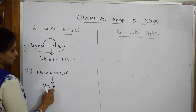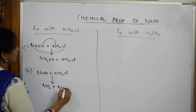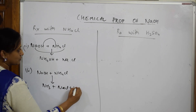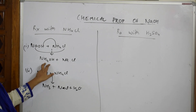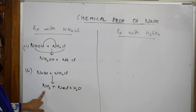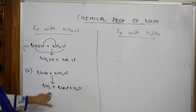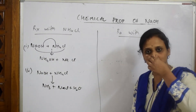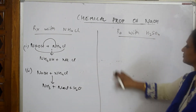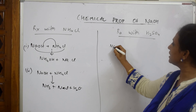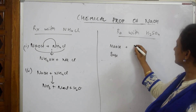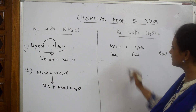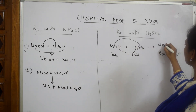So the products are ammonia gas — the pungent-smelling gas — plus NaCl and water. In the double displacement reaction, ammonium hydroxide and sodium chloride are formed; alternatively, ammonia gas, NaCl, and water are formed. In the exam, any option may be given, so identify the correct product. For NaOH reacting with sulfuric acid — acid plus base gives salt plus water — the product is sodium sulfate plus water.